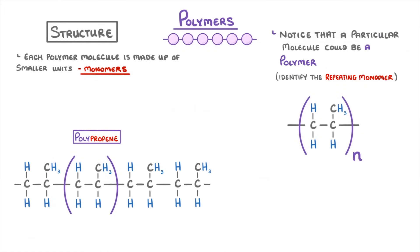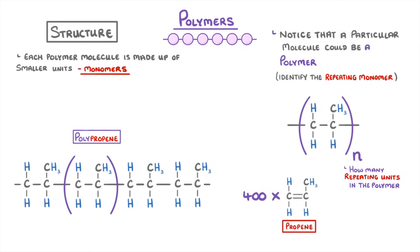You'll often see the letter N in the bottom right corner, which represents how many of those repeating units there are in the overall polymer. So if we wanted to write a reaction for combining 400 propene monomers, instead of drawing out the entire polymer as a product, which would take ages, we could just draw the repeating unit and put 400 in the corner. In general though, we just put N instead of actual numbers.